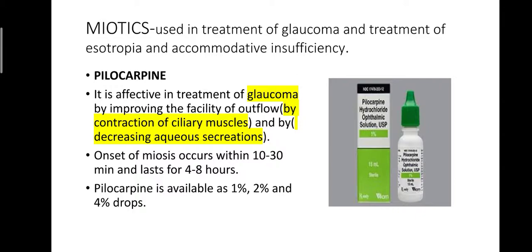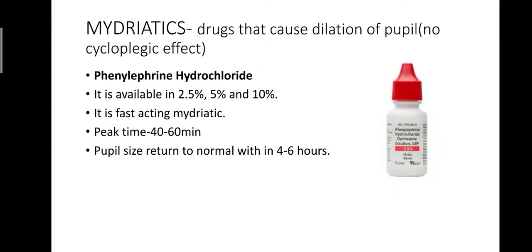Miotics are used for the treatment of glaucoma, esotropia, and accommodative insufficiency. Pilocarpine is an effective treatment for glaucoma, improving the facility of outflow by contraction of ciliary muscles and decreasing aqueous secretion. Onset of miosis occurs within 10 to 30 minutes and lasts 4 to 8 hours. Pilocarpine is available as 1%, 2%, and 4%.